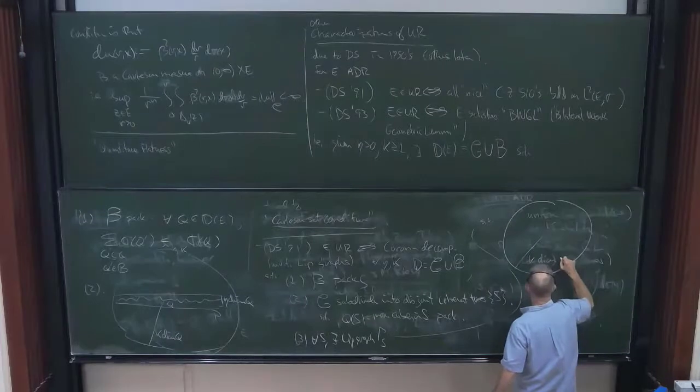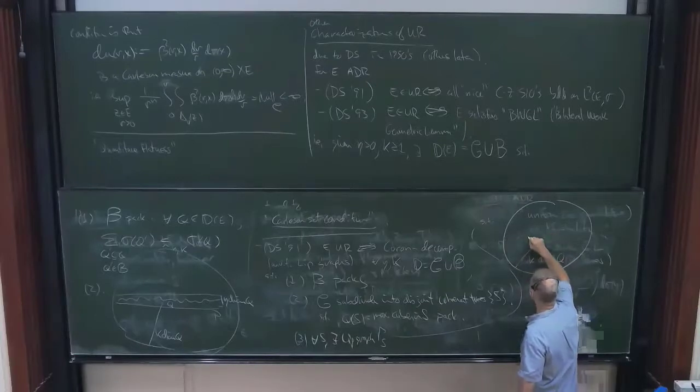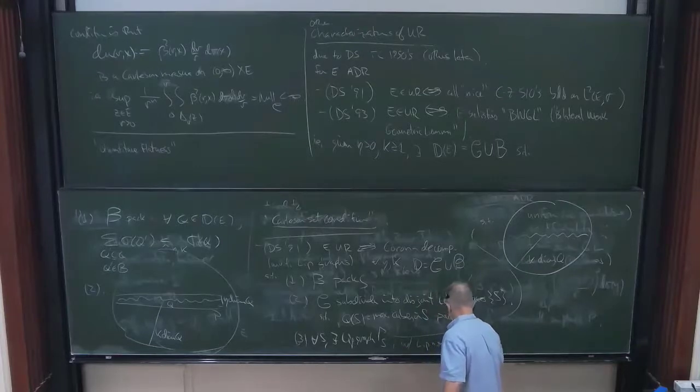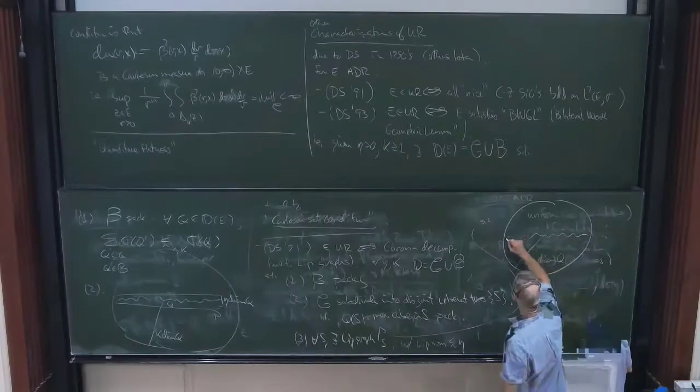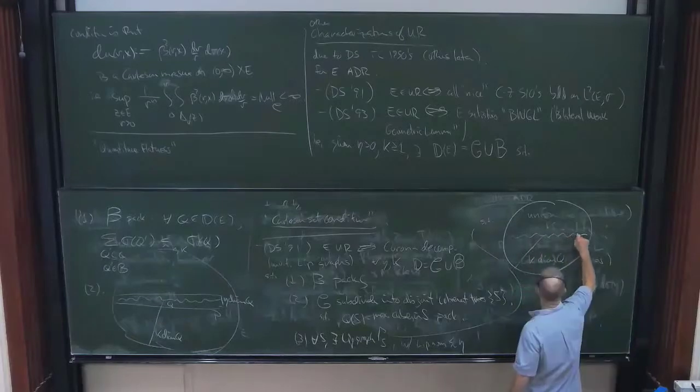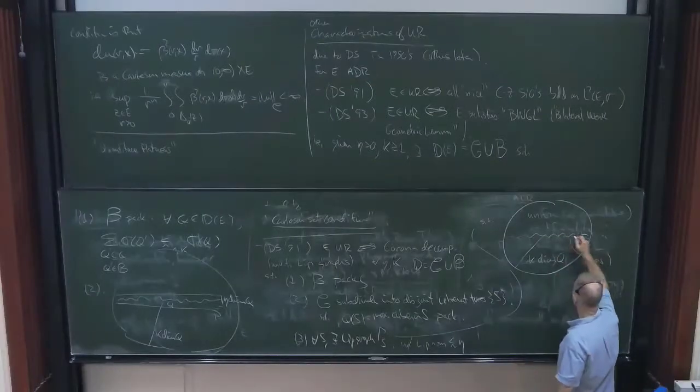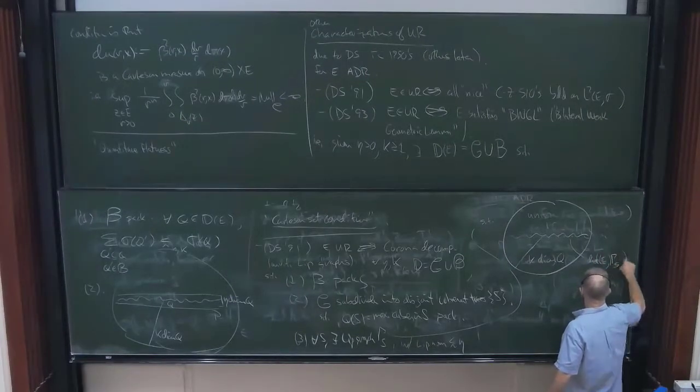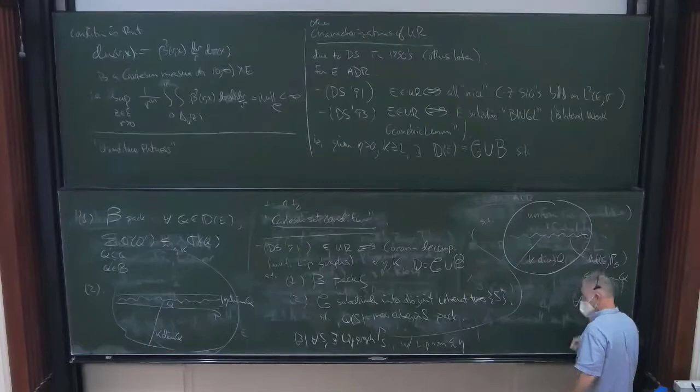We're working at scale of K times the diameter of Q. We have some Lipschitz graph here. Oh, I should have said the Lipschitz graph with a small constant with Lipschitz norm say less than or equal to eta and such that inside this bigger, this dilated version of the ball, the distance from the set E to gamma S is less than or equal to eta times the diameter of Q. And this is for all Q and S.